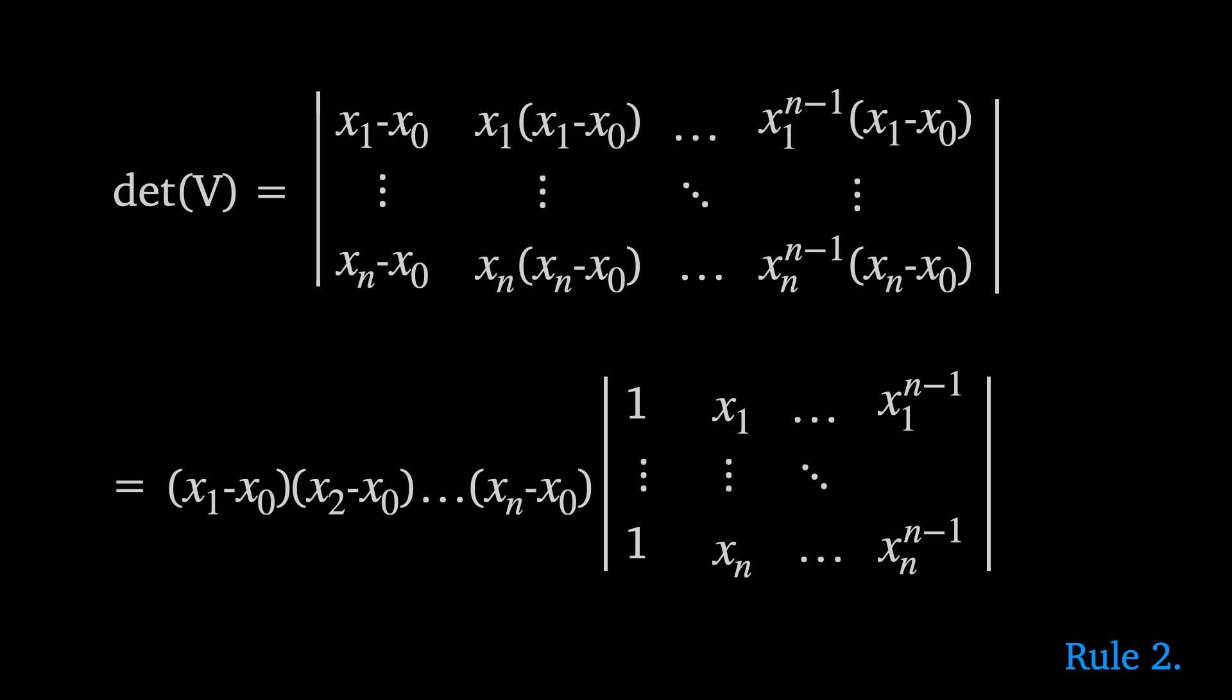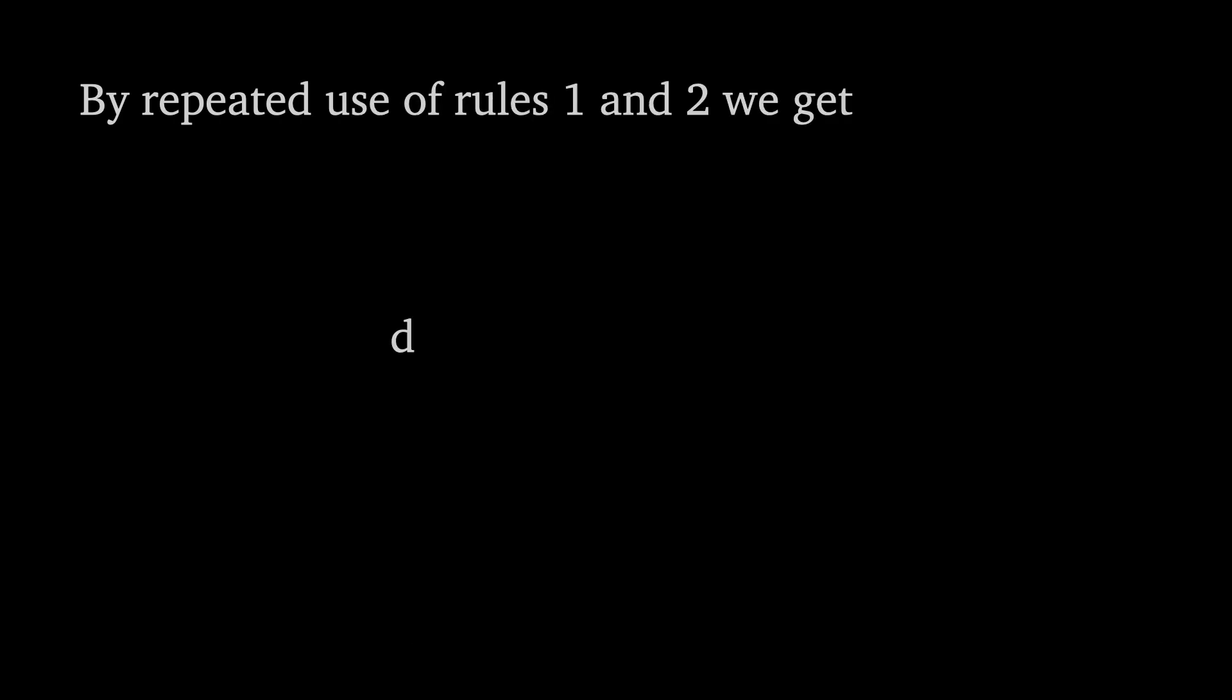Now look at what we're left with after removing these factors. Firstly notice how we've taken out all references to x sub 0. They're now in these factors. And second, that's another Vandermonde matrix. More specifically it's the Vandermonde matrix of x sub 1 to x sub n. So repeating rules 1 and 2 on this new Vandermonde matrix we can see how each time we would pull out a new set of factors until eventually reaching the 2 by 2 case. This is how we get the Vandermonde determinant.